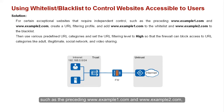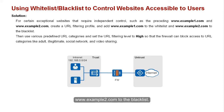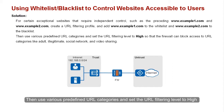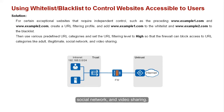For certain exceptional websites that require independent control, such as www.example1.com and www.example2.com, create a URL filtering profile and add www.example1.com to the Whitelist and www.example2.com to the Blacklist. Then use various predefined URL categories and set the URL filtering level to High, so that the firewall blocks access to URL categories like Adult, Illegitimate, Social Network, and Video Sharing.